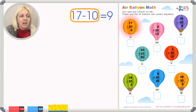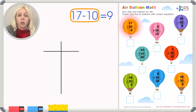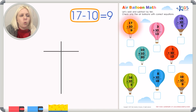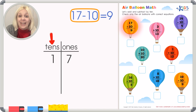Let's start by writing out the equation: 17 minus 10 equals 9. I'm going to use something called a T-chart — we call it that because it looks like a lowercase T. We label the columns: ones on one side, tens on the other. We take our first number, 17, and plug it in: seven ones and one ten.